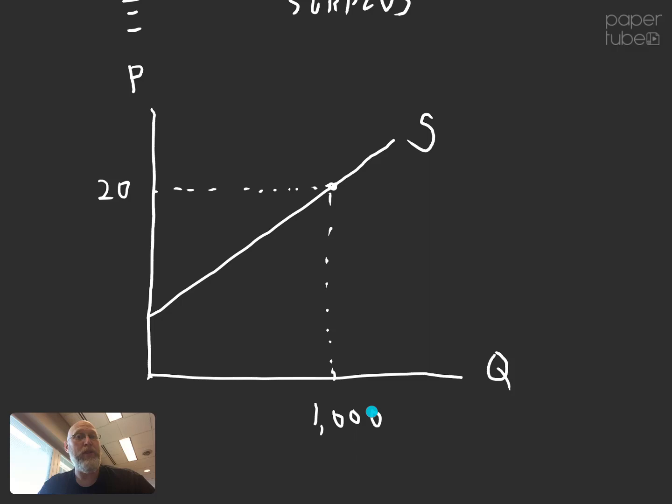The producer surplus is this area right here. And the producer surplus, think of it like profit. It's not exactly profit. There are some circumstances where it can be exactly equal to profit.